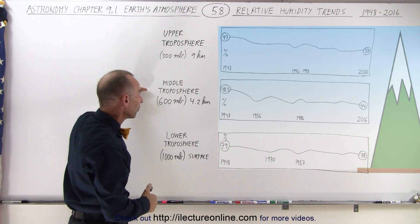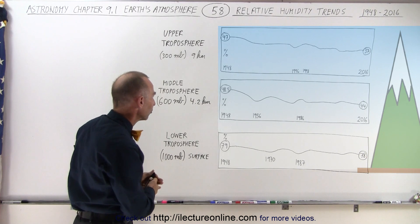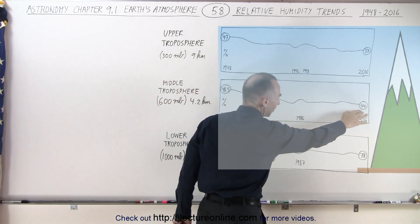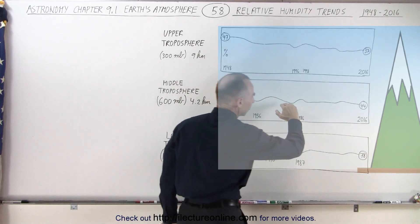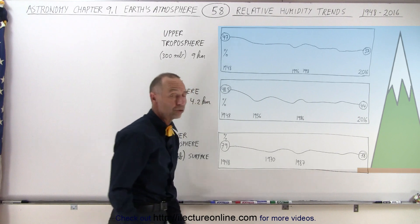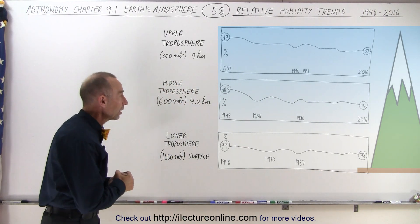The middle troposphere was similar to the upper troposphere, started at a much higher percentage at 48.5 and ended up at about 44 percent. But you can see that since the 1980s, there really hasn't been much of a change in the middle troposphere relative humidity.